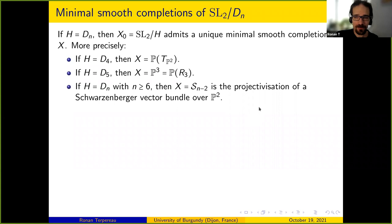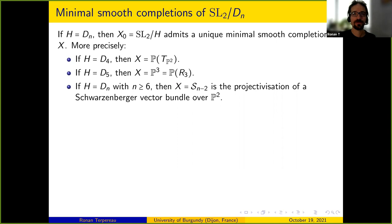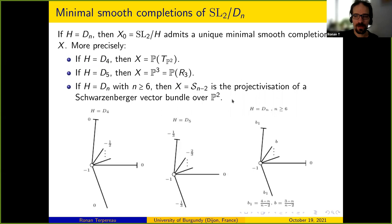For E6, E7, E8, the minimal smooth completions are the smooth quadric in P^4, the Fano 3-fold V5, and the Mukai-Umemura Fano 3-fold V22 respectively — all very famous and important when working with Fano varieties or Mori theory.